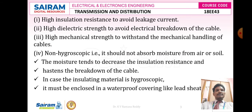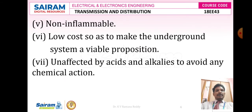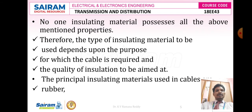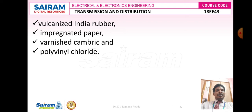The material should possess high physical stability, chemical stability, be non-inflammable, and be low cost. Then only can we prefer underground cables and their insulating materials. No single insulating material possesses all the above-mentioned properties, so the type of insulating material used depends upon the purpose — the type of service and the amount of voltage. The principal insulating materials used in cables are rubber, vulcanized India rubber, impregnated paper, varnish cambric, and polyvinyl chloride.